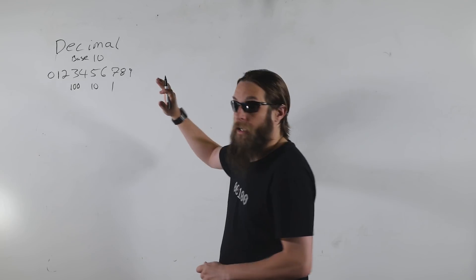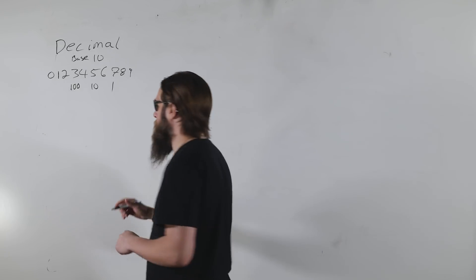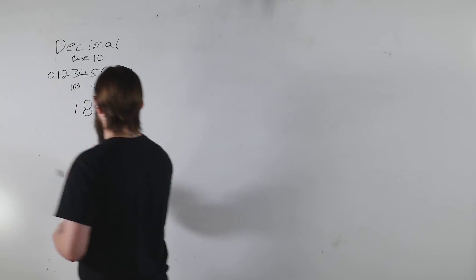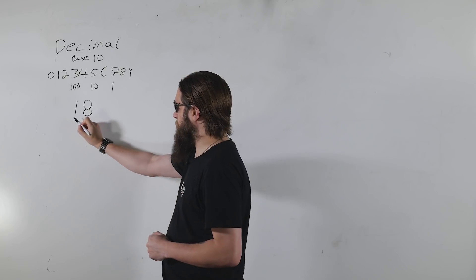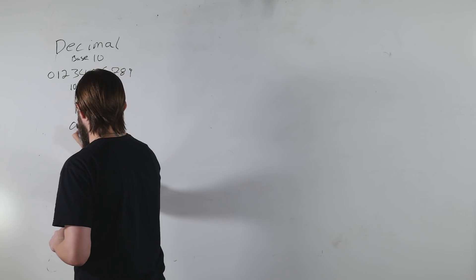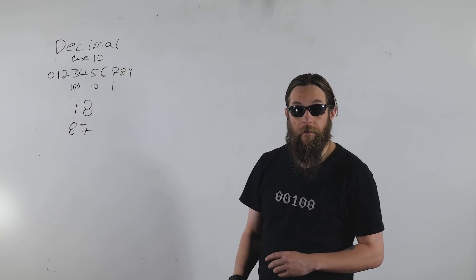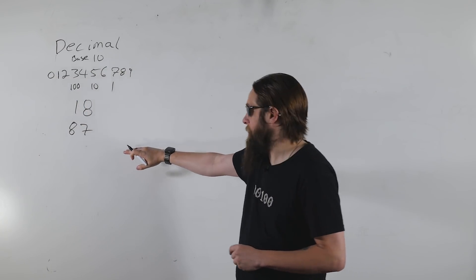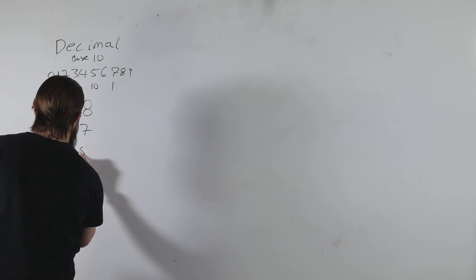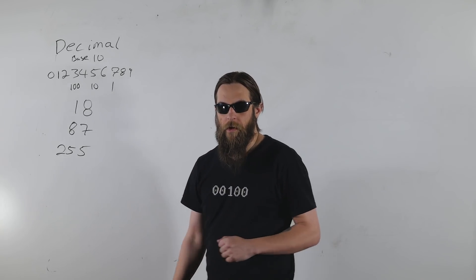We're going to give an example of a decimal number — the kind of numbers that we all learn and understand. Let's say 18, 87, and 255. Those are the three numbers we're going to work with today, and we're going to translate these into three other numbering systems.